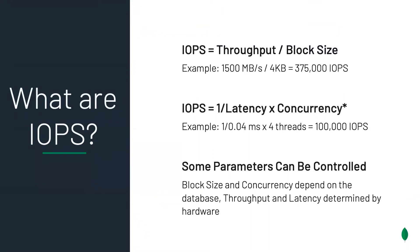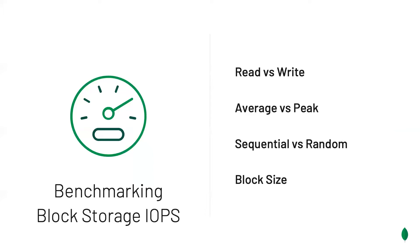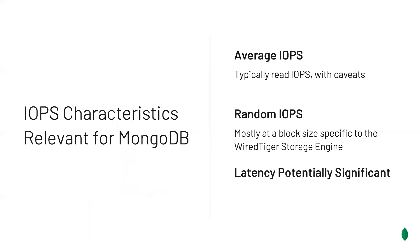There's an asterisk next to concurrency, because ultimately all storage media are limited in how many concurrent operations they can handle. Some of these parameters can be controlled — typically block size and concurrency depend on the database, but throughput and latency are determined by hardware. We can look for read or write performance, average or peak performance, sequential or random IOPS, and IOPS for different block sizes. Here we'll focus on average IOPS, typically read IOPS unless we're talking about a write-heavy cluster, and random IOPS mostly at the block size specific to the WiredTiger storage engine — without discounting the importance of latency for latency-sensitive workloads.